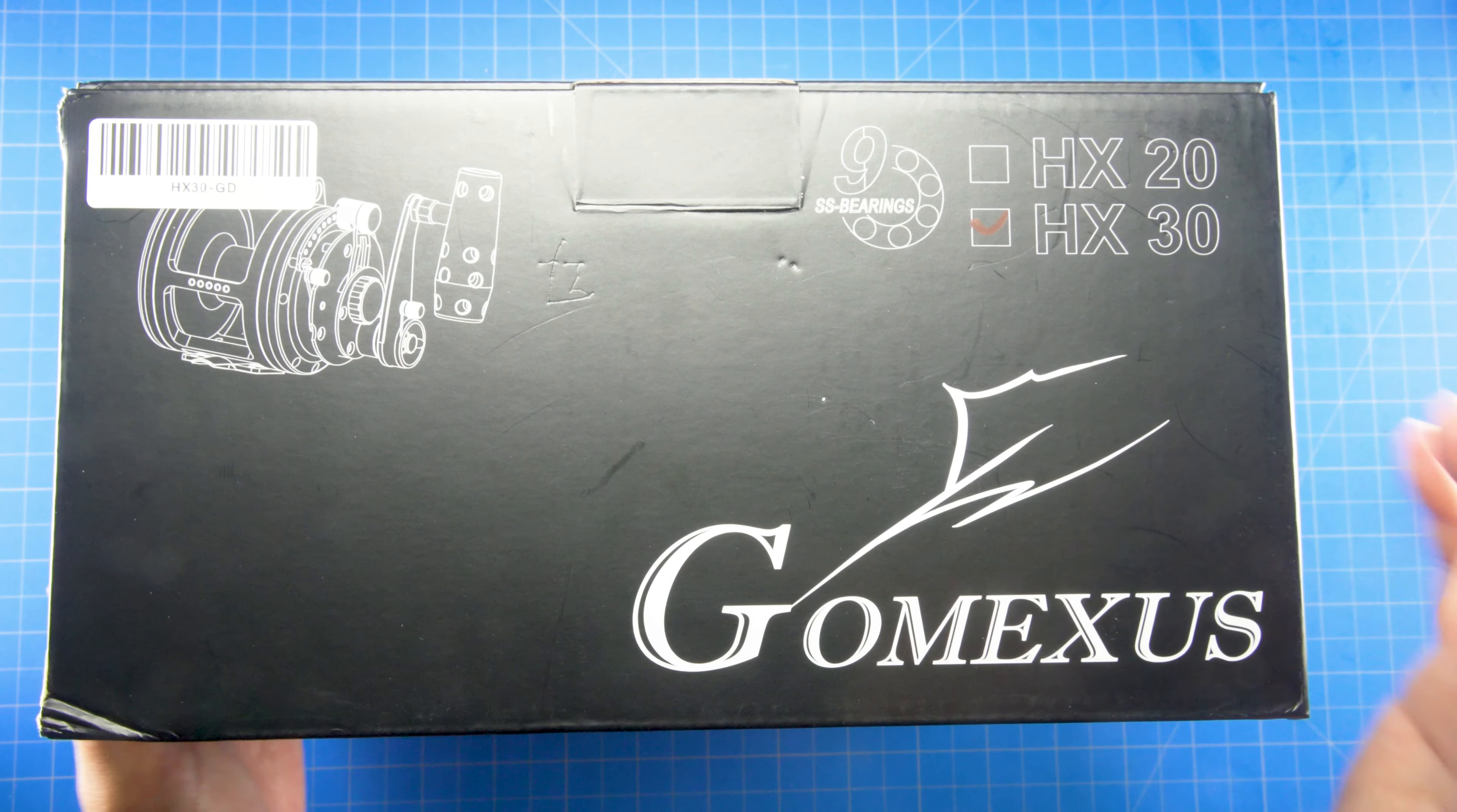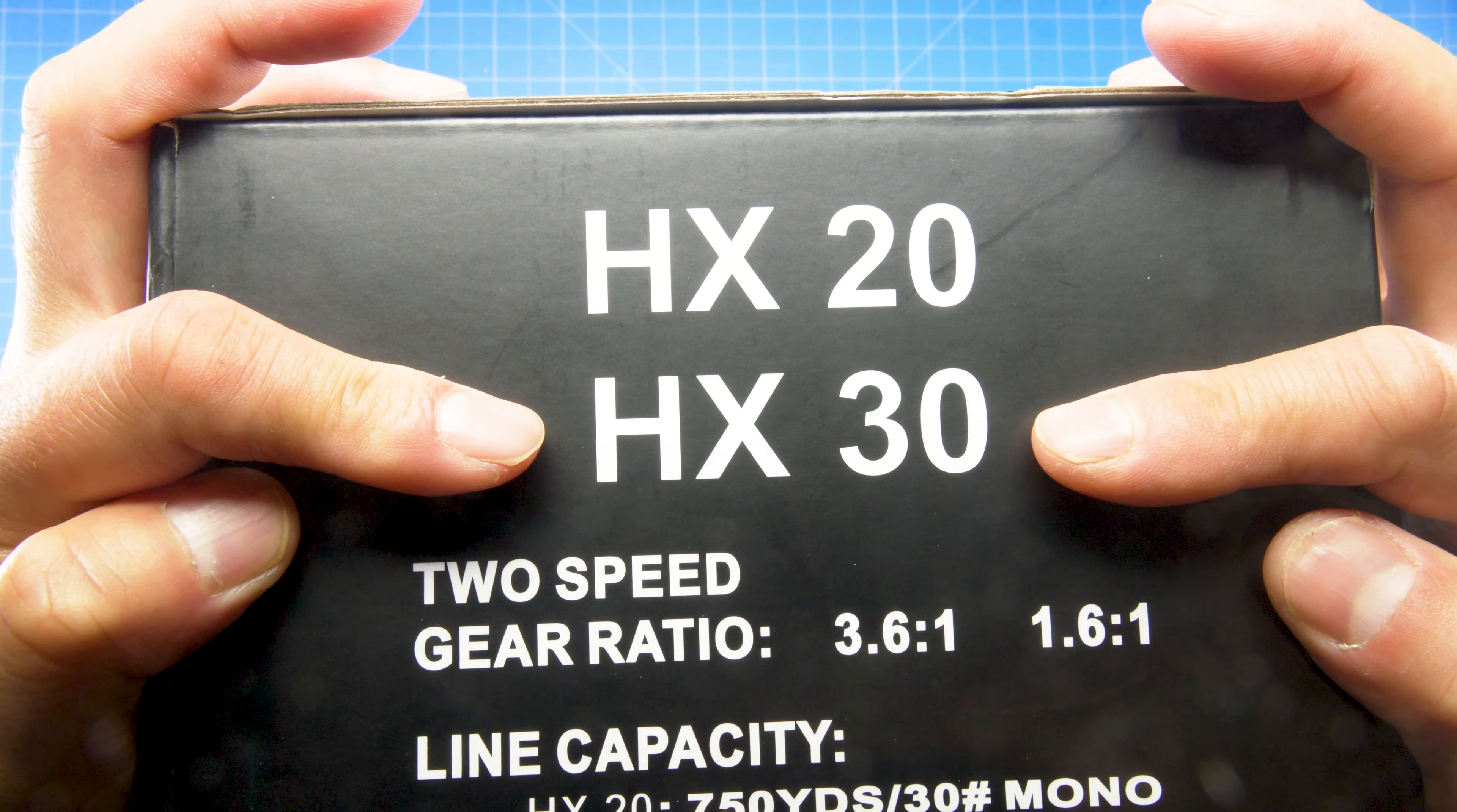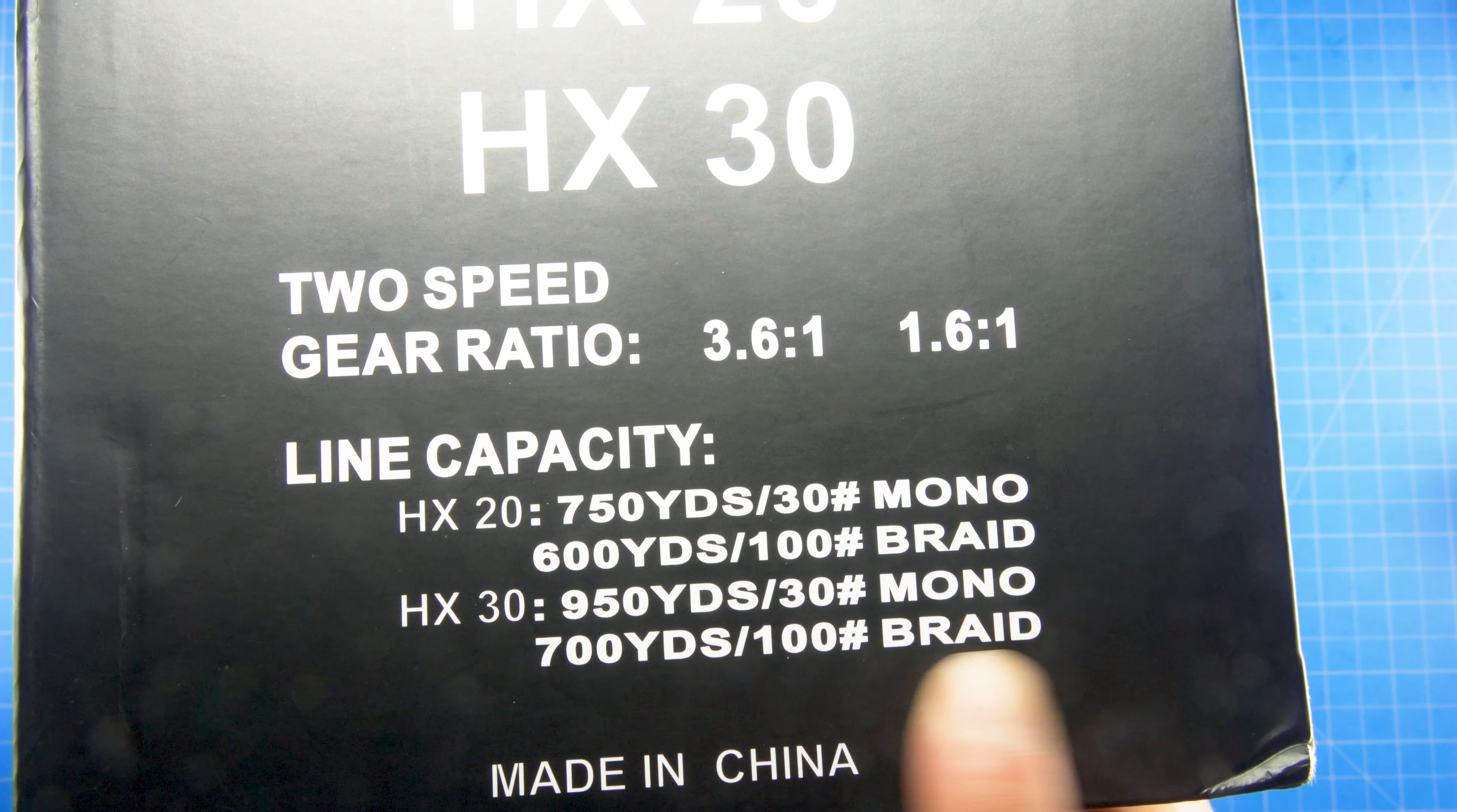Alright guys, this is a Gomexis HX30. This is a trolling reel, a really big hefty trolling reel. They have this HX20 and the 30. The gear ratio is 3.6 on the high, 1.6 on the low. Capacity 700 yards of 100 pound braid.